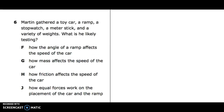Number six: Martin gathered a toy car, a ramp, a stopwatch, a meter stick, and a variety of weights. What is he likely testing? F: how the angle of a ramp affects the speed of the car. G: how mass affects the speed of the car. H: how friction affects the speed of the car. J: how equal forces work on the placement of the car and the ramp.